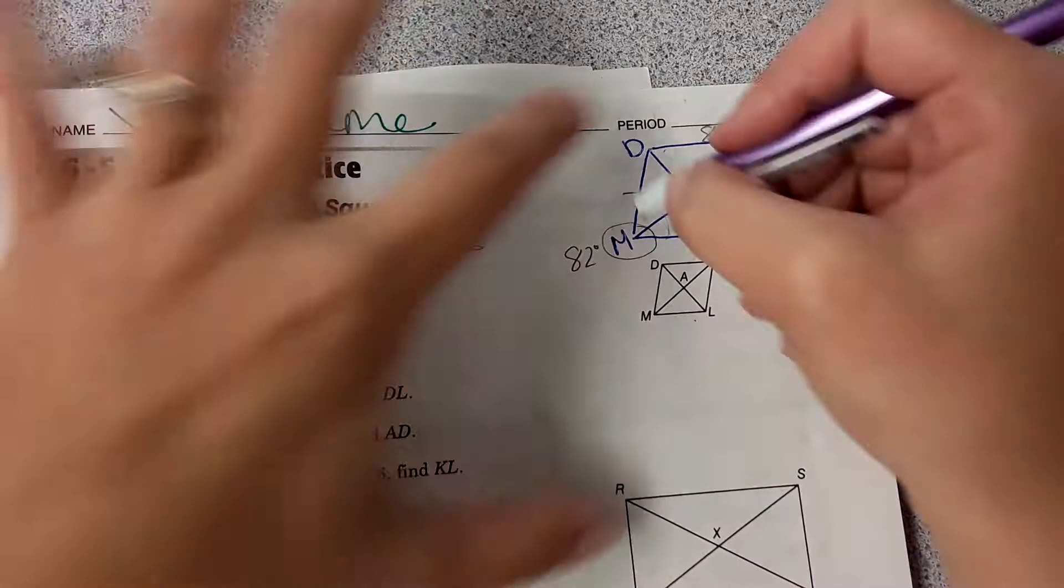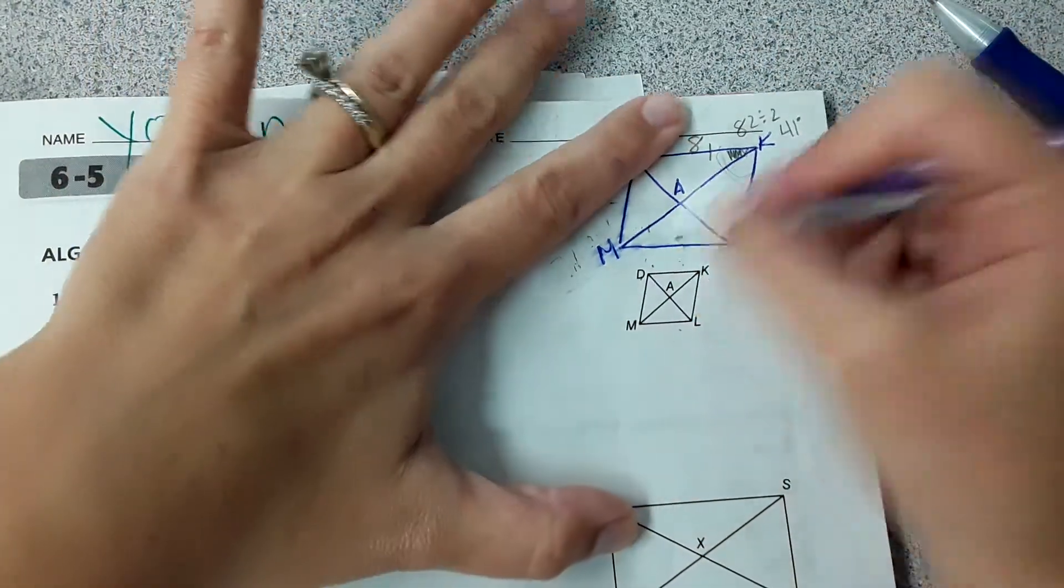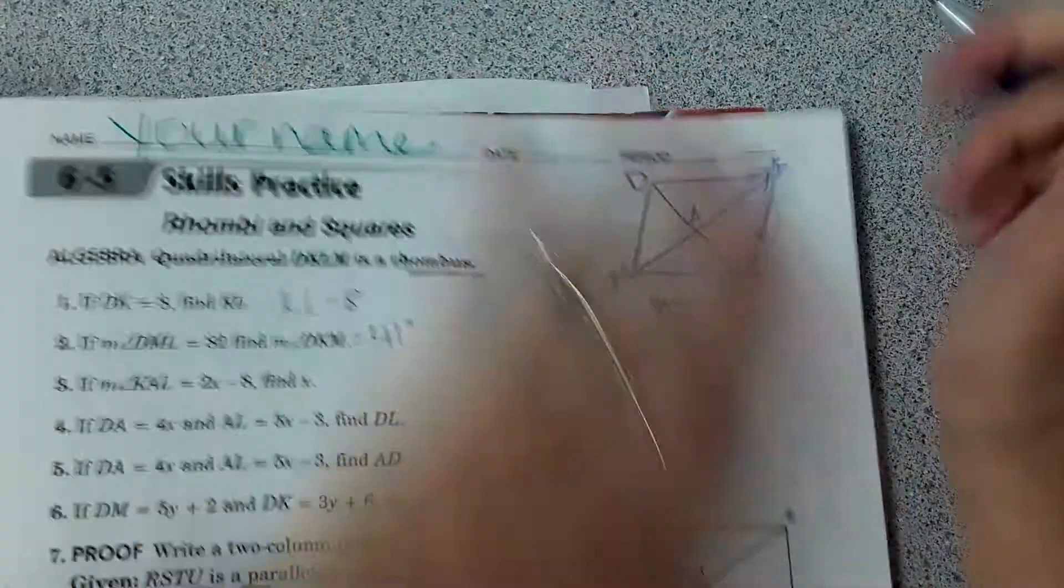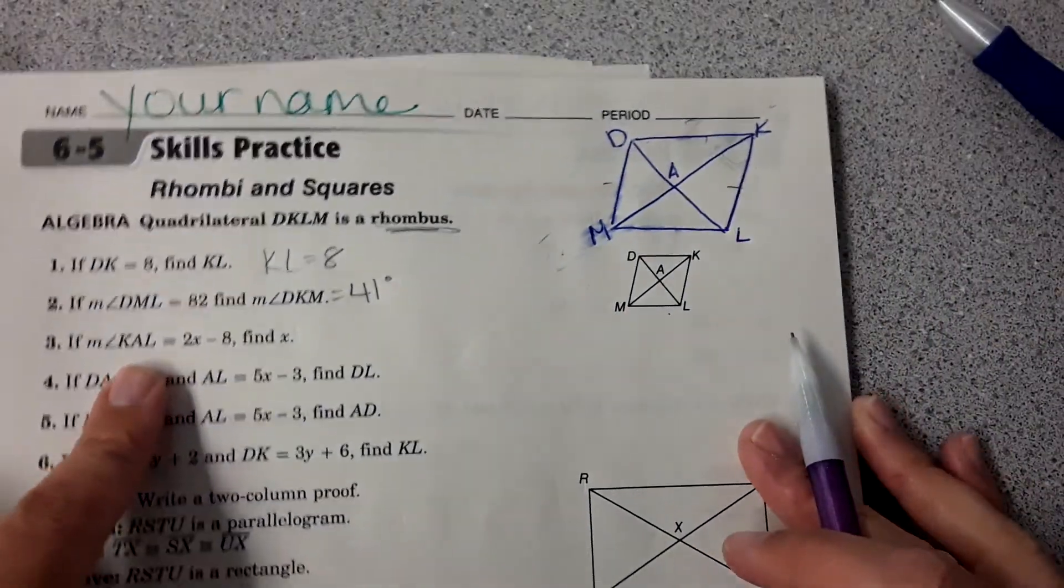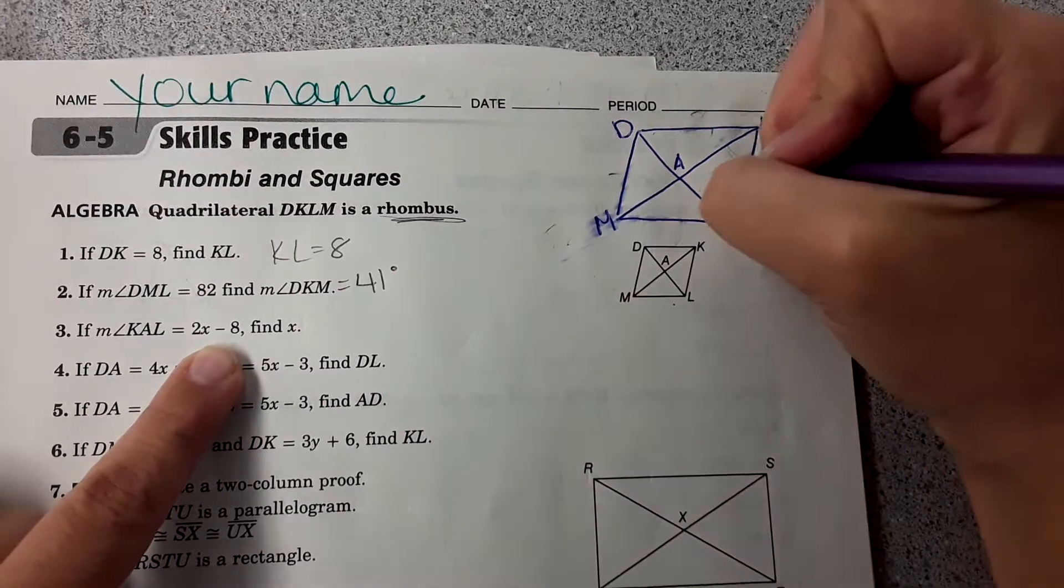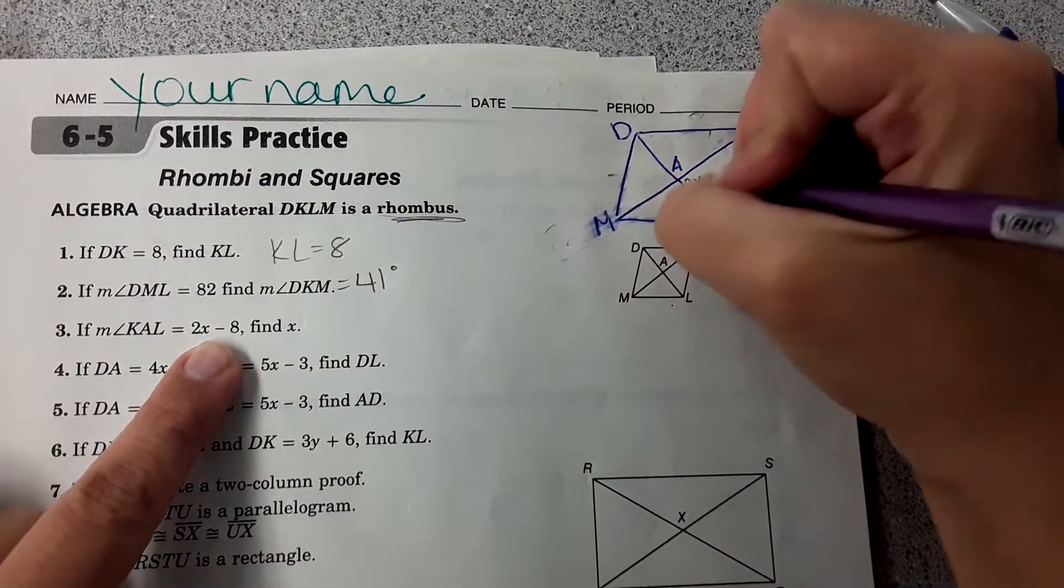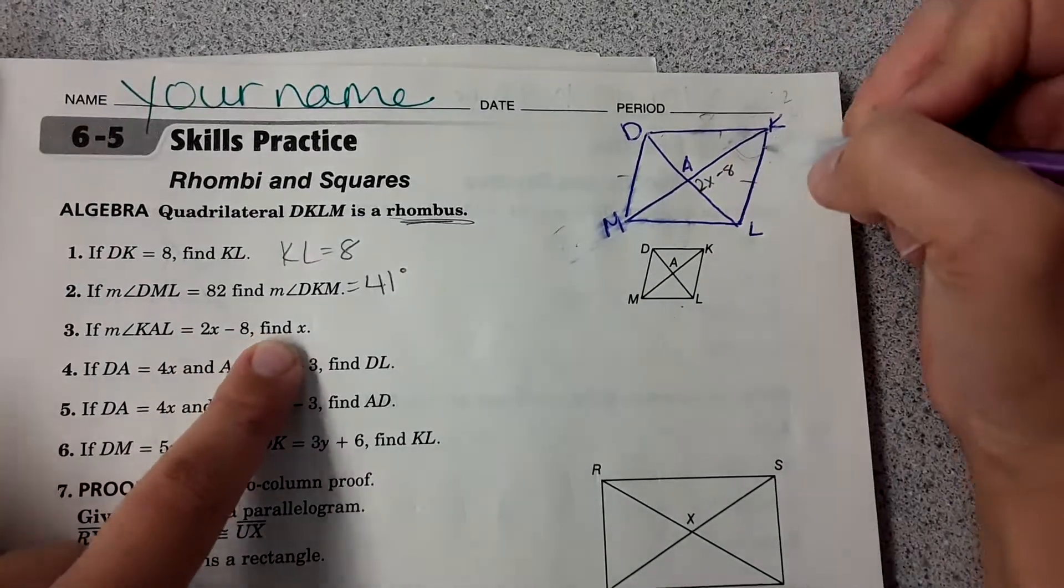I'm going to erase my marks here because it's smearing. That way I have more room to write the next scenario. So measure of KAL is 2x minus 8, find x.